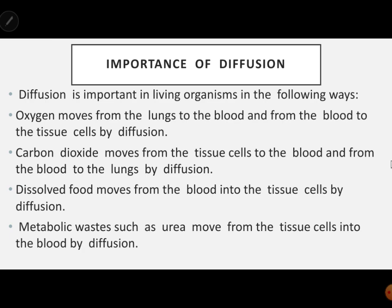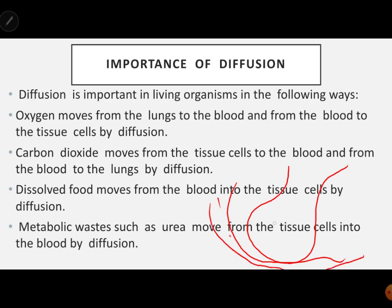Diffusion is important in living organisms. Oxygen moves from the lungs to the blood and from the blood to the tissue cells by diffusion. At the alveoli, oxygen crosses into the blood capillary by diffusion. Carbon dioxide moves from the tissue cells to the blood and is then expelled outside, also through diffusion.